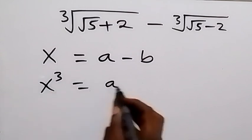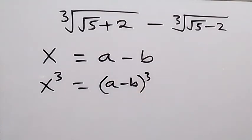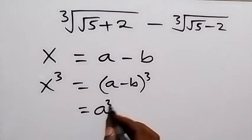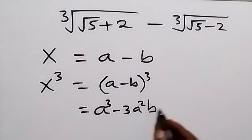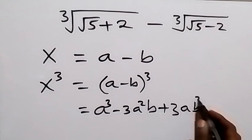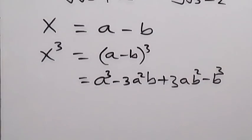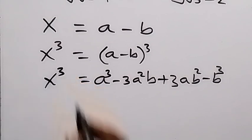From here, let's cube both sides: x³ equals (a − b)³. When we expand the right-hand side, this gives us a³ − 3a²b + 3ab² − b³. This is the expansion of the right-hand side, which equals x³.